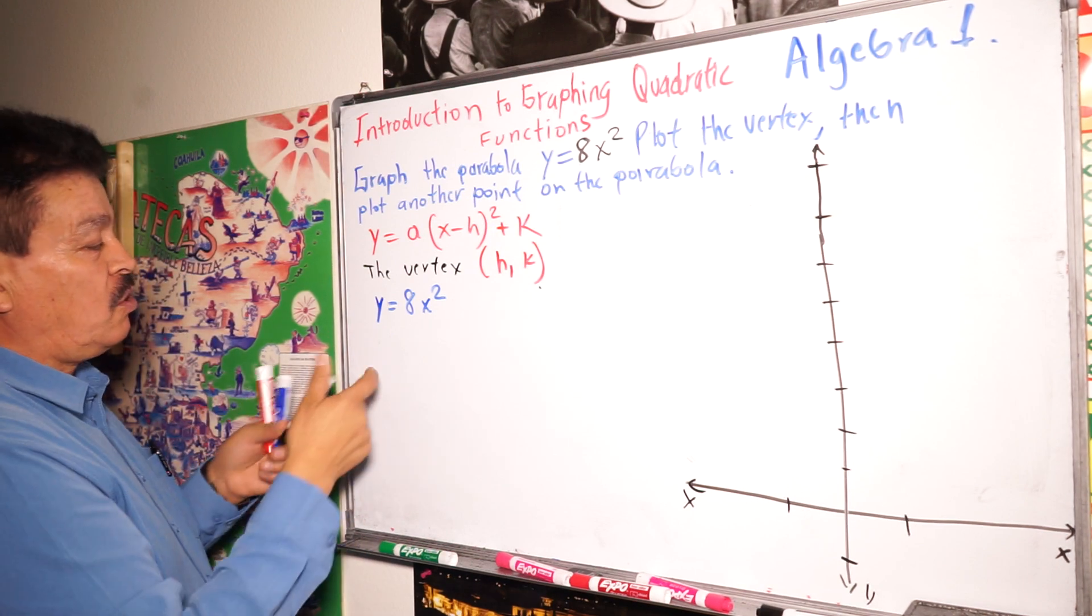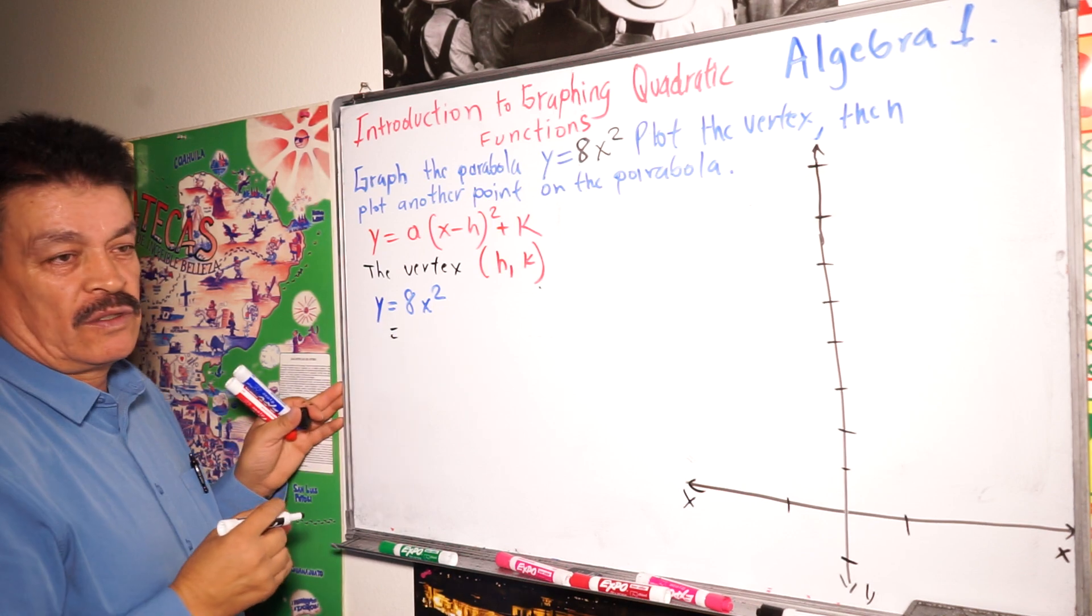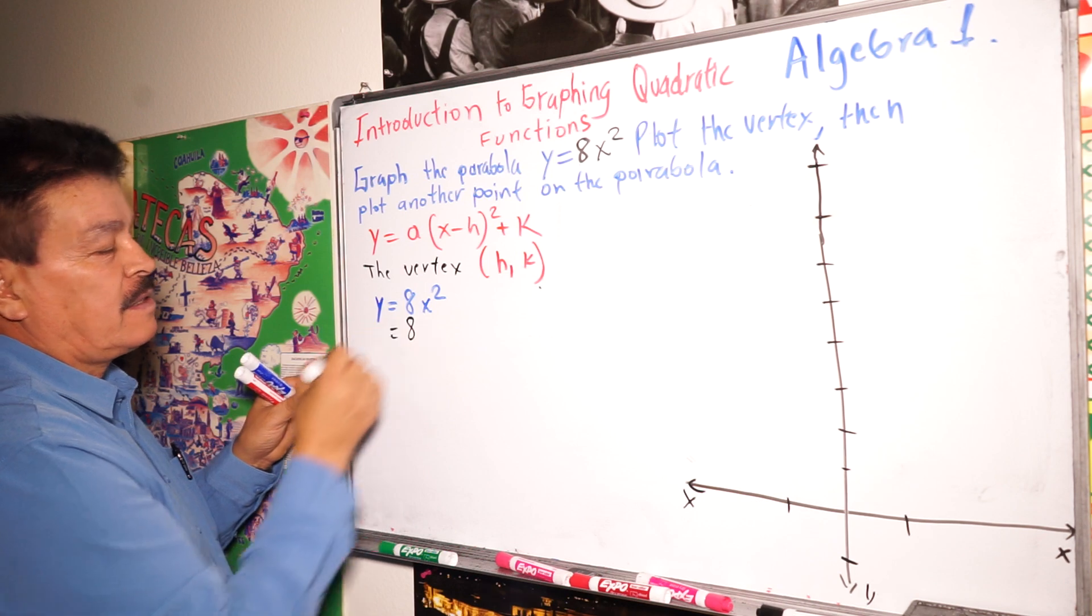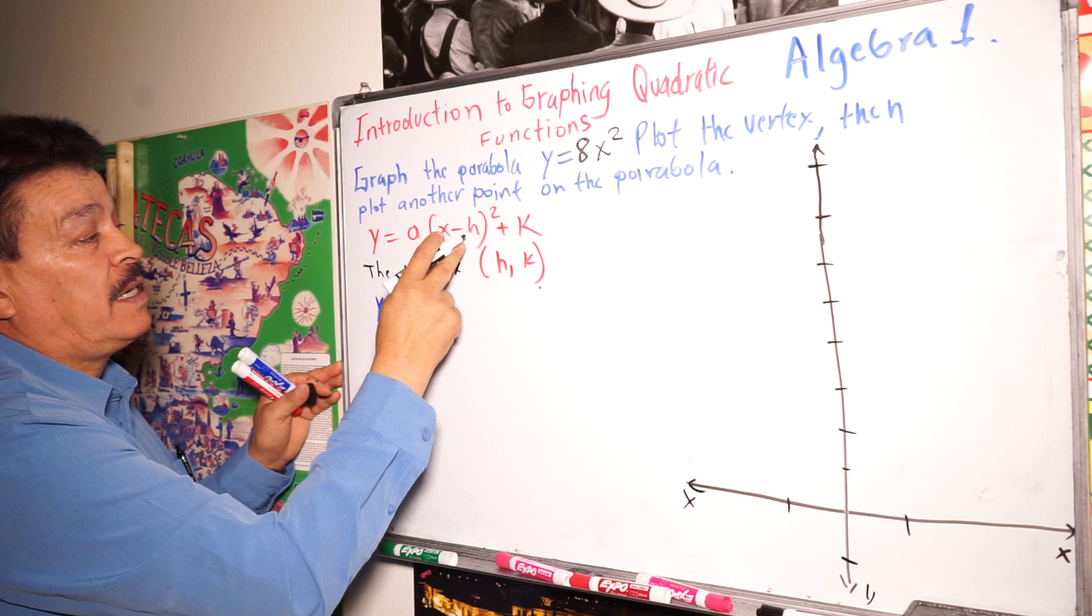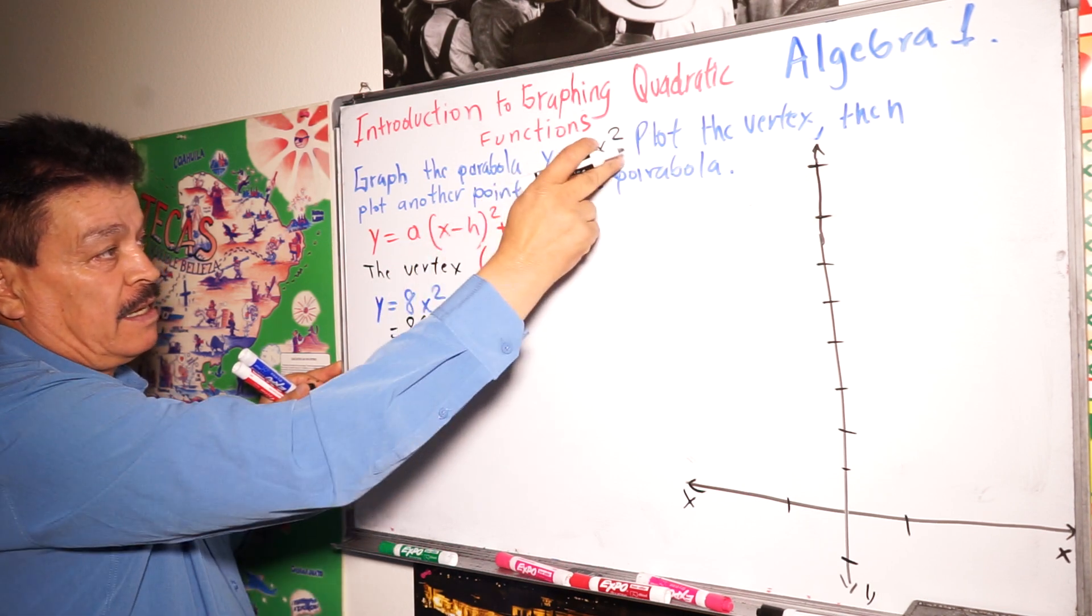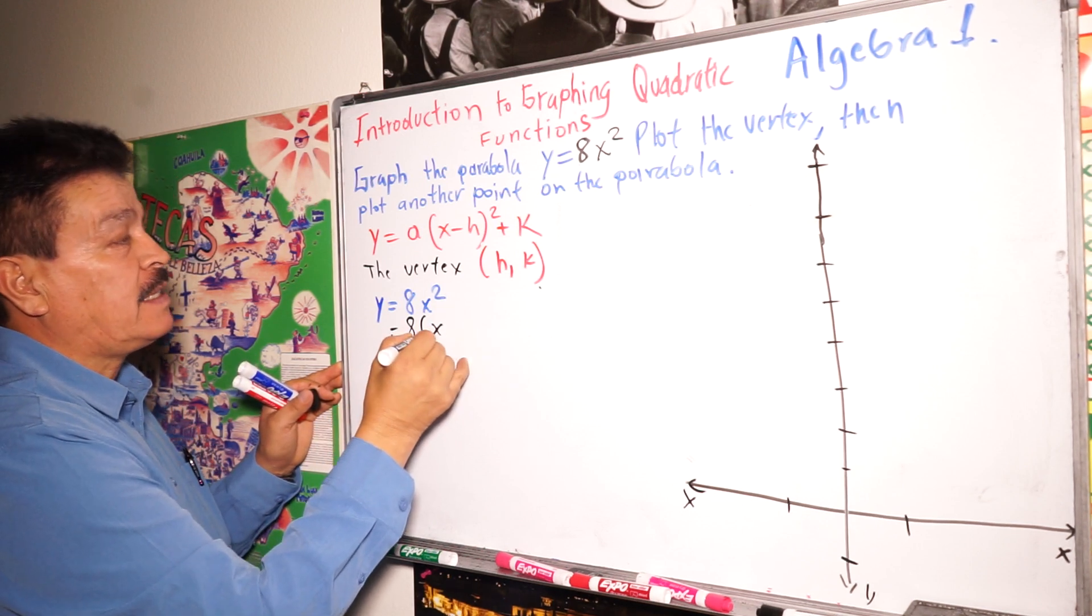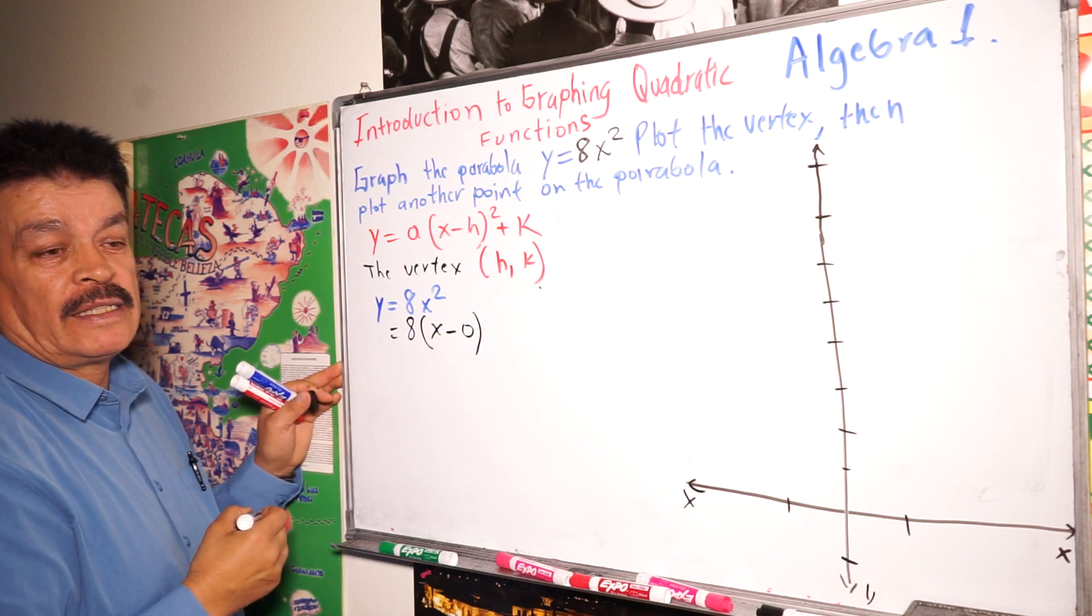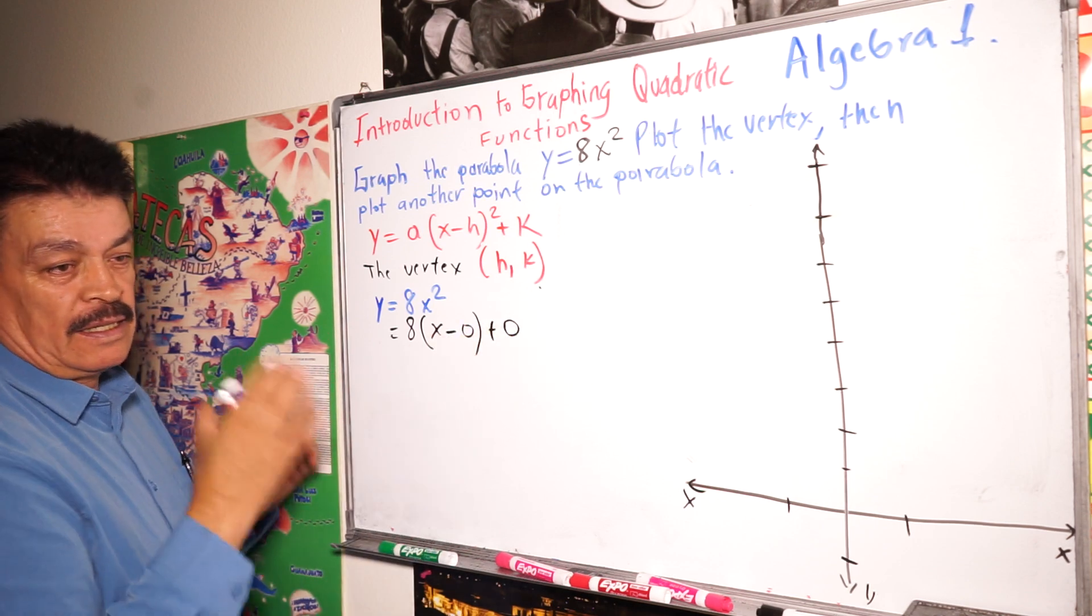The next step is substitute here. Just apply the formula. Just write 8 here. And then the formula. The formula is x minus h. In this case, we're using this formula. Here we're going to have x minus zero plus zero. This is our problem.